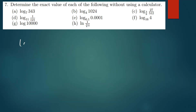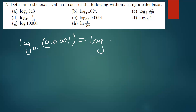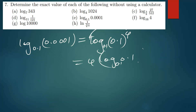Now for a decimal example: log of 0.001, base 0.1. The value 0.001 can be written as 0.1 to the power 4, base 0.1. The 4 drops down: 4 · log(0.1) base 0.1. Since log(0.1) base 0.1 equals 1, we get 4 times 1, and the answer is 4.